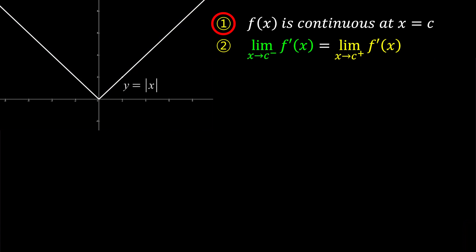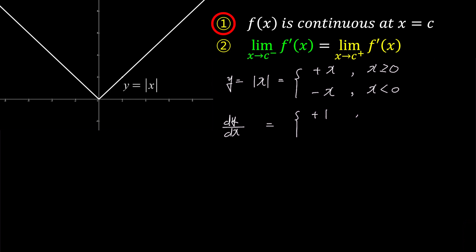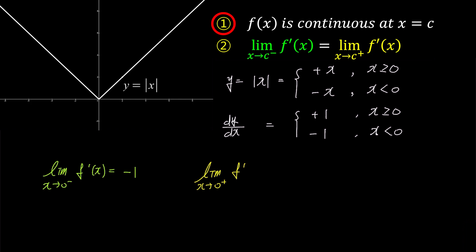To examine the second condition, let's express the function as a piecewise function. Modulus x equals x when x is greater than or equal to 0, and it becomes negative x when x is less than 0. Differentiating this function with respect to x, we get a slope of 1 for x greater than or equal to 0, and a slope of negative 1 for x less than 0. In other words, as x approaches 0, the left-hand limit of f prime of x is negative 1, while the right-hand limit is 1, resulting in different values. Therefore, the second condition is not satisfied, and f of x is not differentiable at 0.